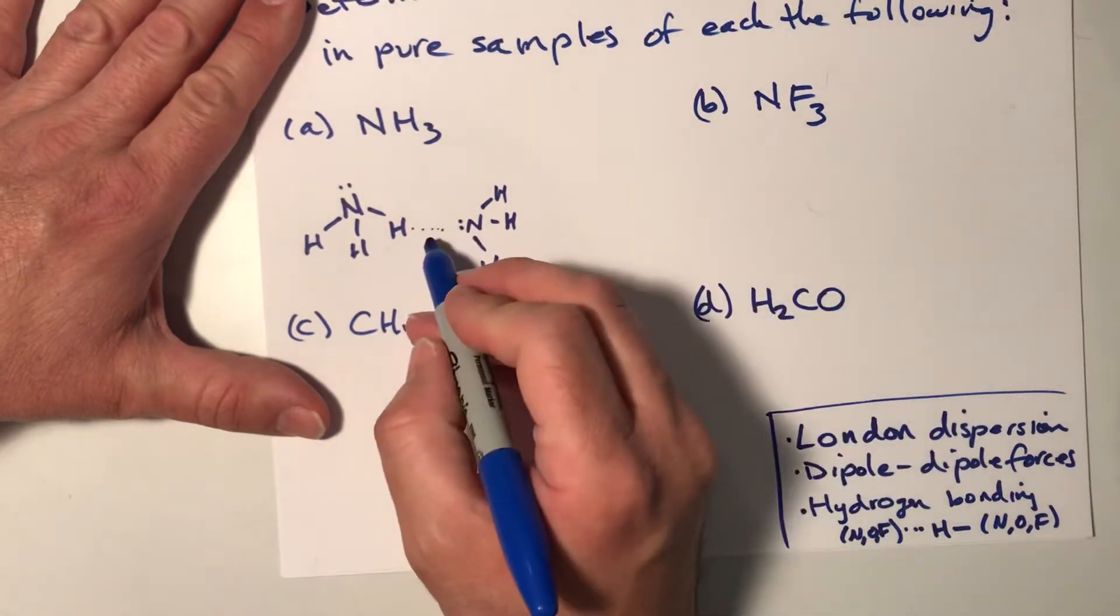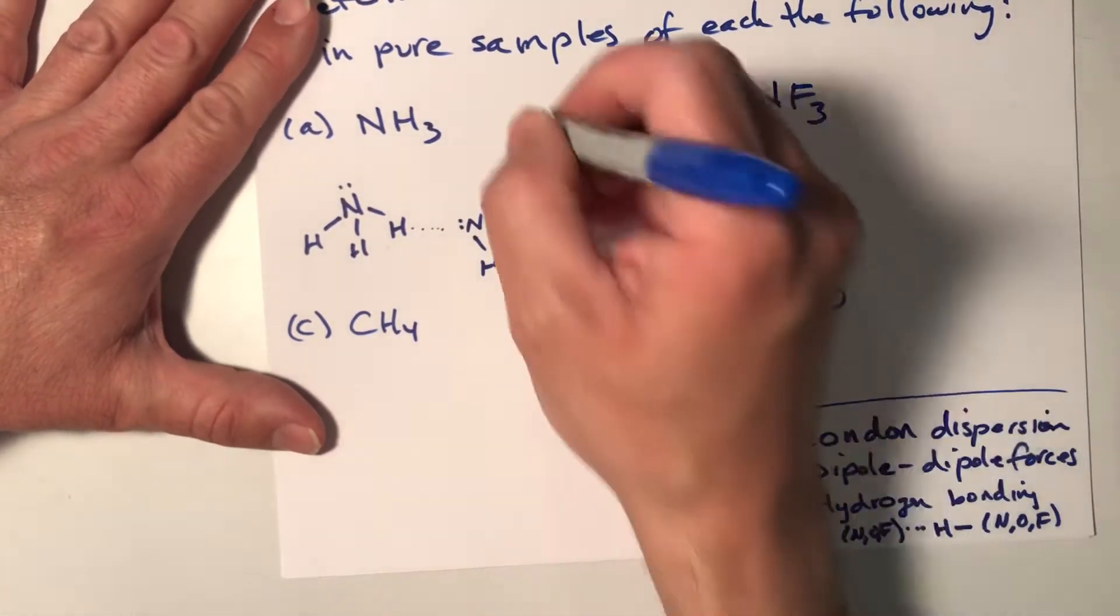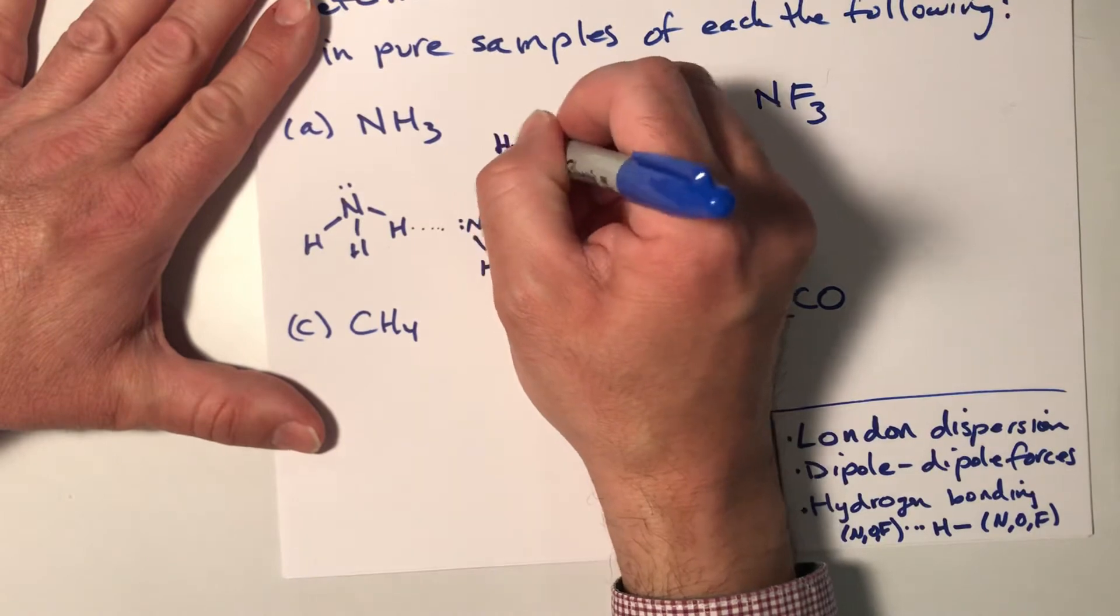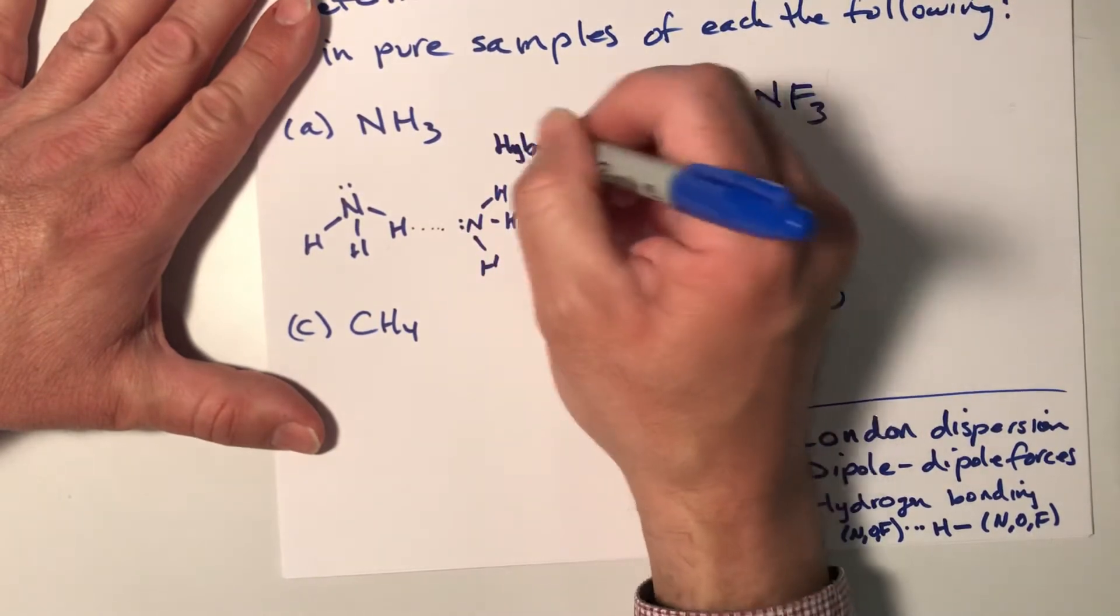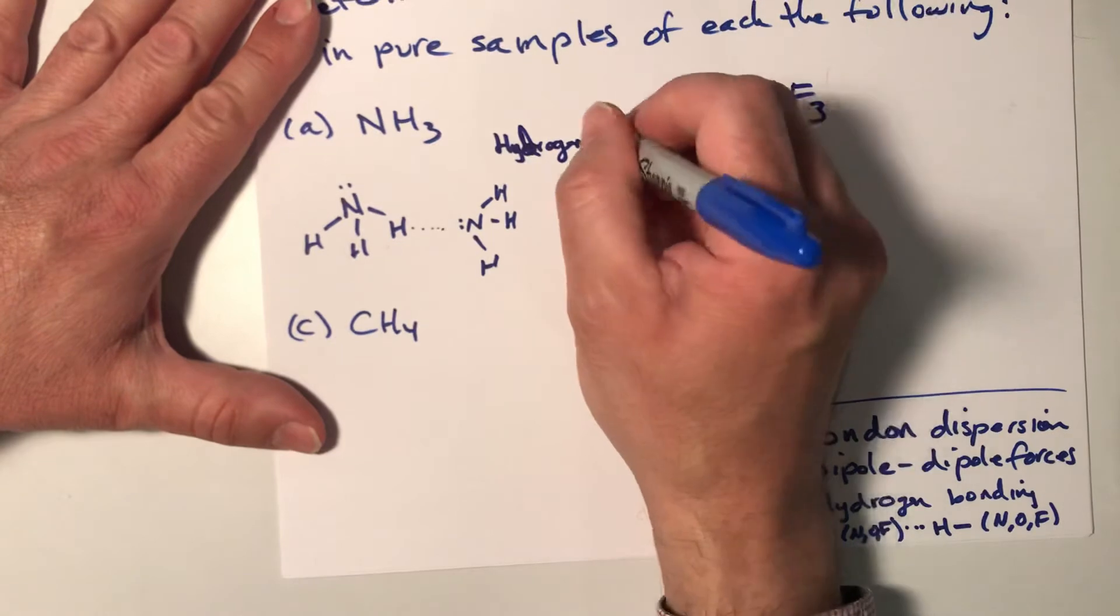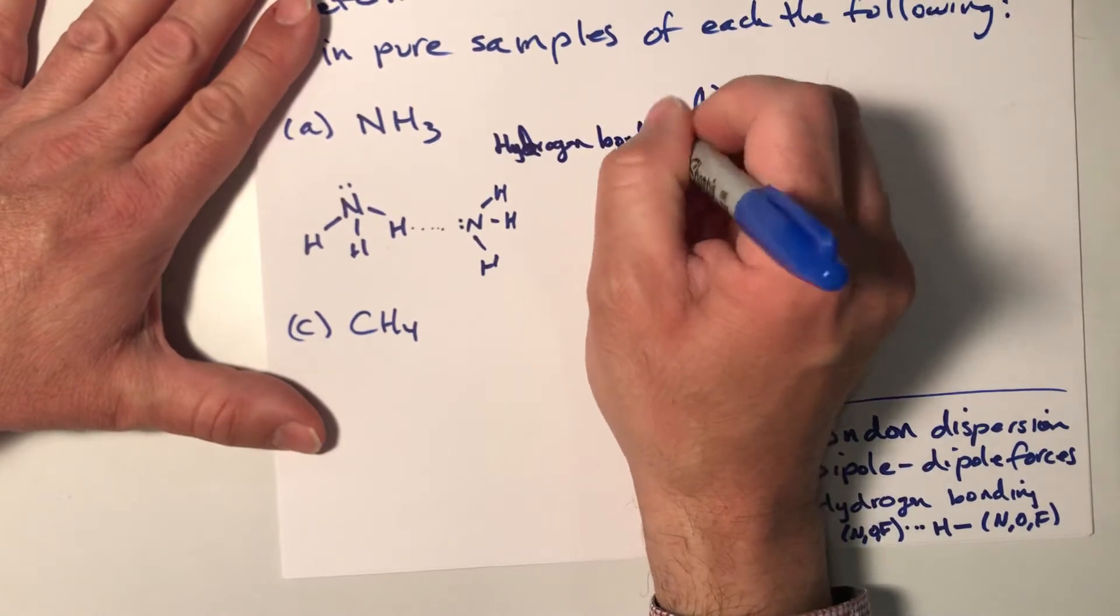H in between a nitrogen and a nitrogen, so this substance is going to exhibit hydrogen bonding. So hydrogen bonding is one of them. I drew my D backwards. Hydrogen bonding.